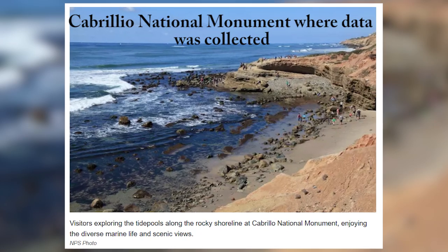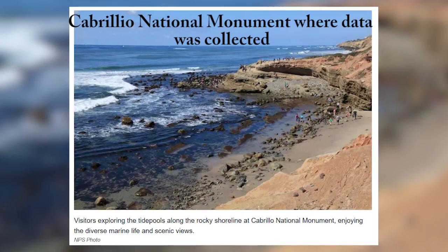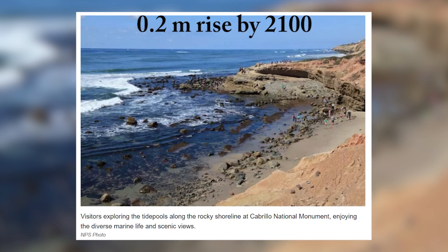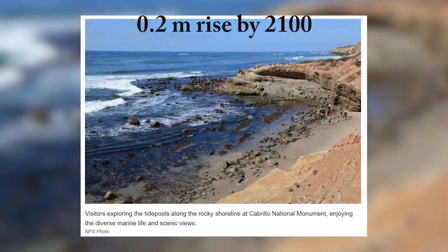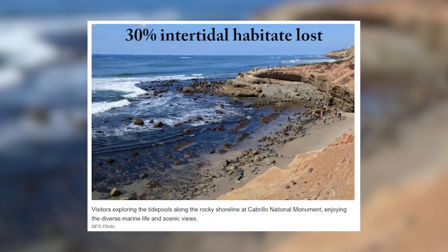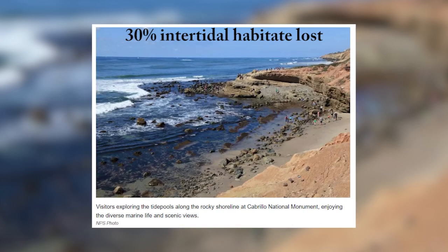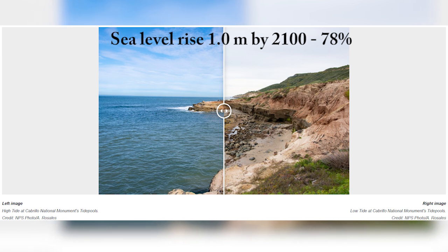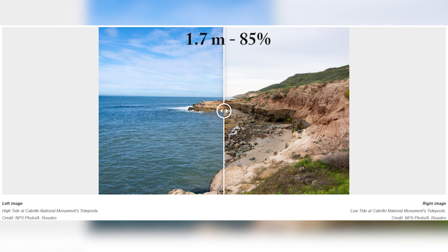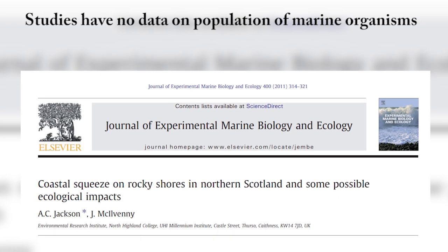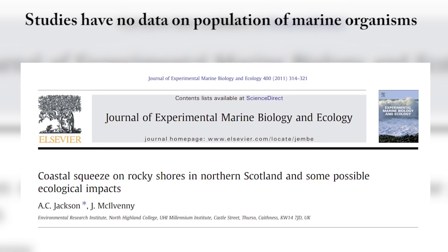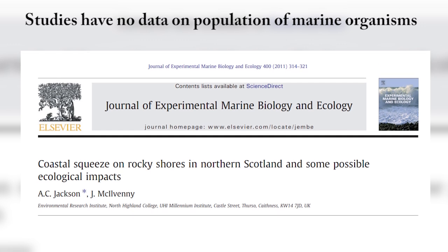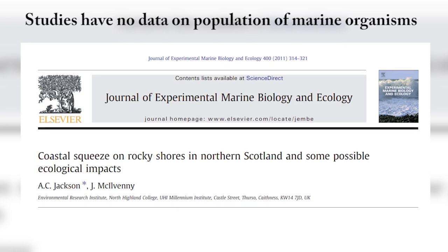If the observed trend in San Diego were to continue, there would be a 0.2 metre rise by 2100, and the model predicts almost 30% of the intertidal habitat would be lost across the study sites. At a sea level rise of 1 metre by 2100, it would be 78%, and at 1.7 metres it would be 85%. Similar predictions have also been made for rocky shore habitats in other areas around the world, including Scotland, New South Wales Australia, and Eastern Australia.